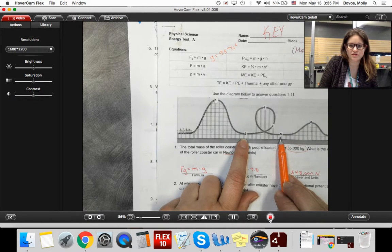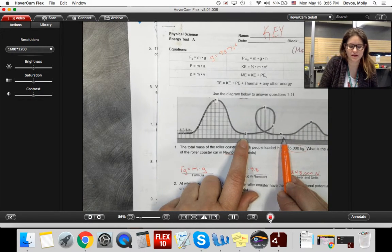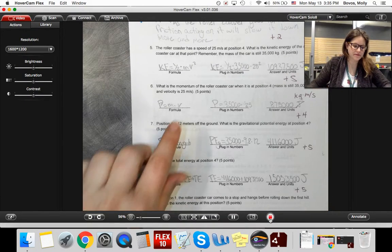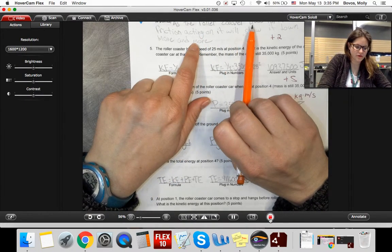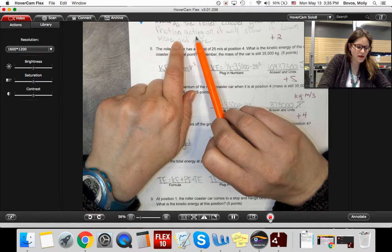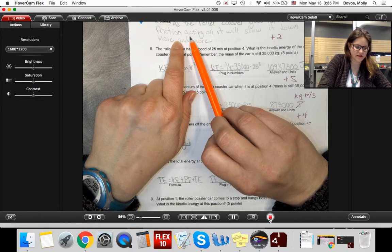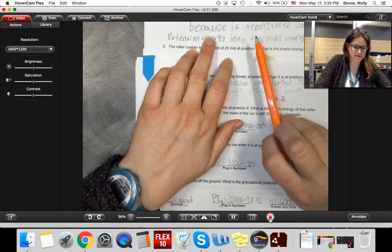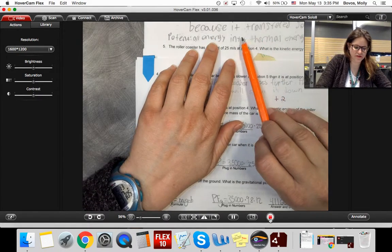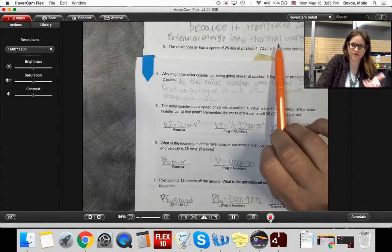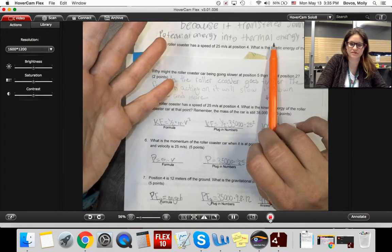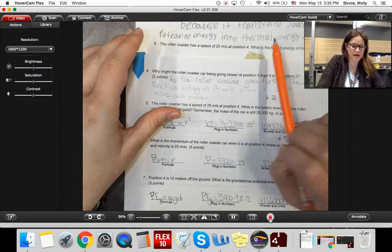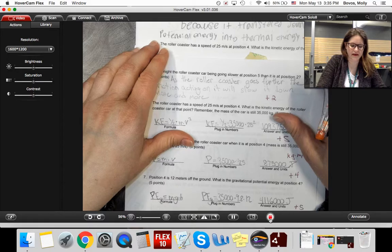So if there's no friction, these two points should have the same amount of kinetic energy. But as the roller coaster goes along, there's going to be friction acting on it, which will slow it down. Another really good response is, some of the potential energy was transformed into thermal energy, or some of that kinetic energy is transformed into thermal energy, and so it loses some of that velocity.